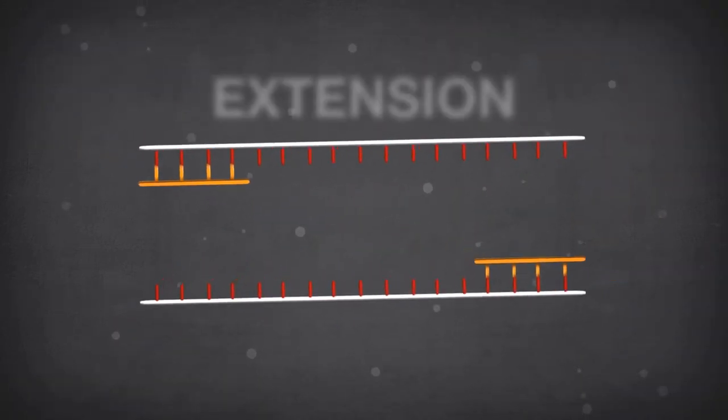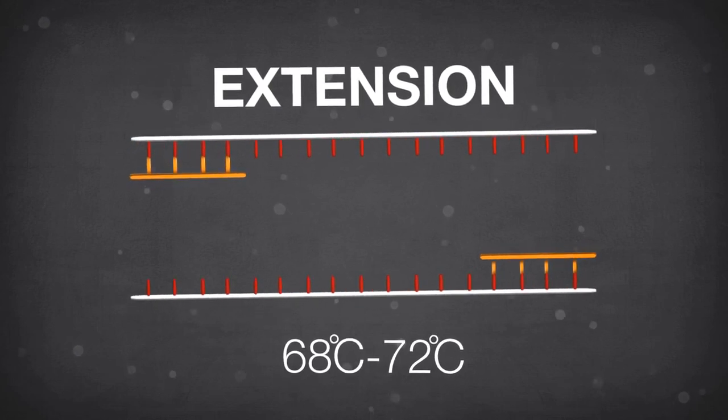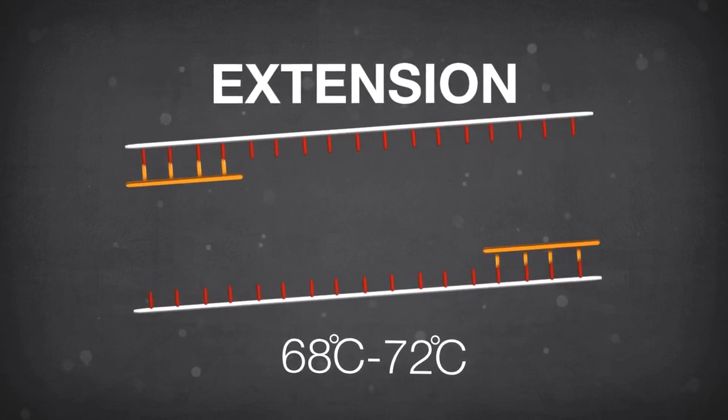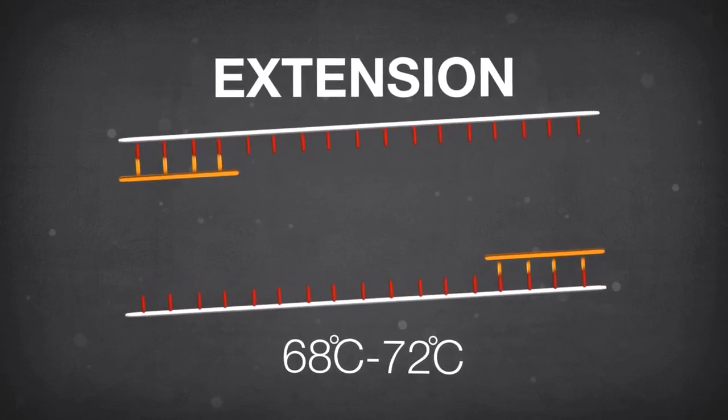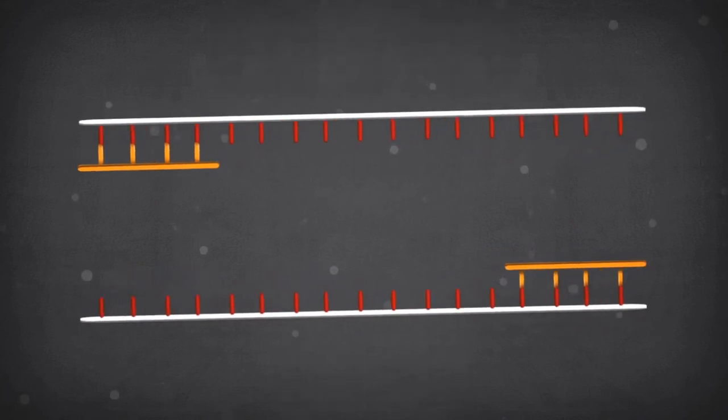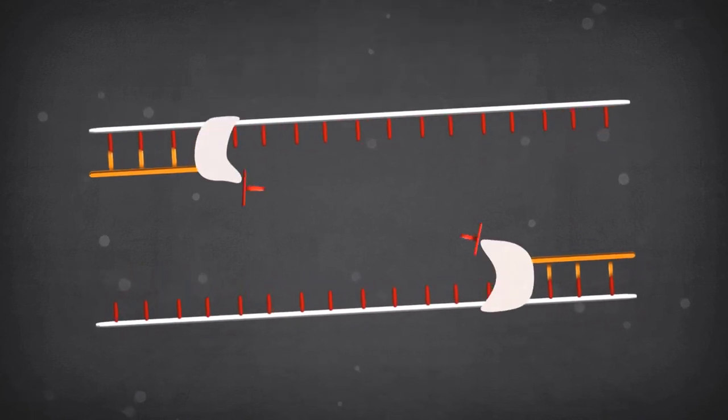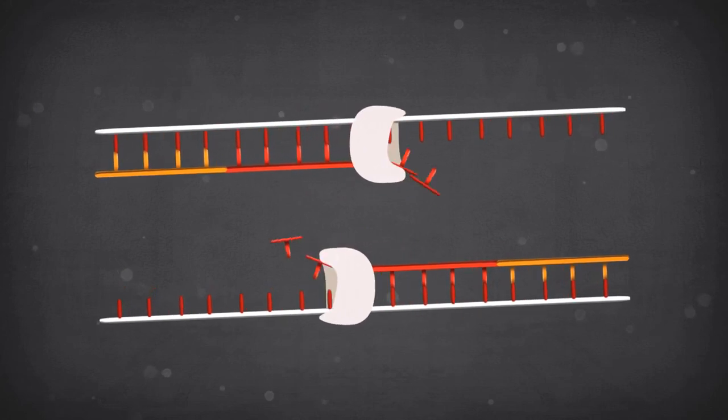The final step is extension at 68 degrees Celsius or 72 degrees Celsius, depending on the enzyme's optimal temperature. In this step, the enzyme extends the primer molecules by incorporation of the building blocks, the DNTPs.